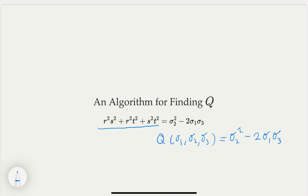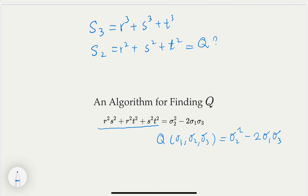You can try other symmetric polynomials using this algorithm. For example, S3 equals R cubed plus S cubed plus T cubed, or S2 equals R squared plus S squared plus T squared. You can find what the corresponding Q is. For S2, it is actually sigma one squared minus 2 sigma two. You can follow the algorithm to derive the same answer. For S3, you can use this as an exercise to figure it out.